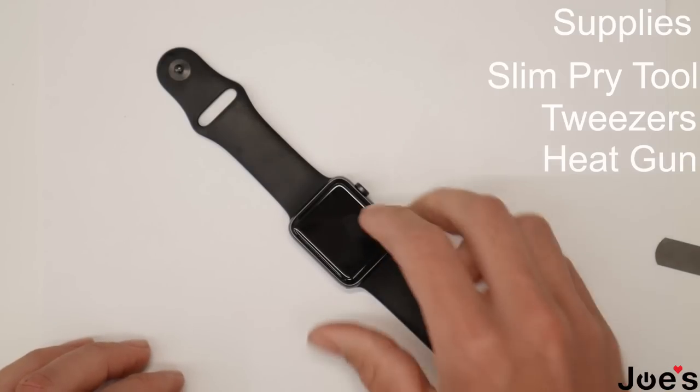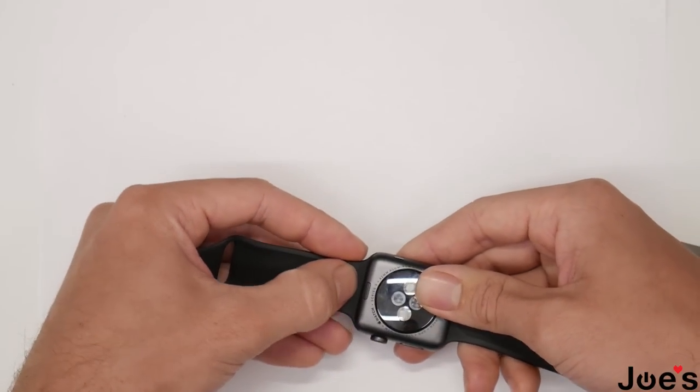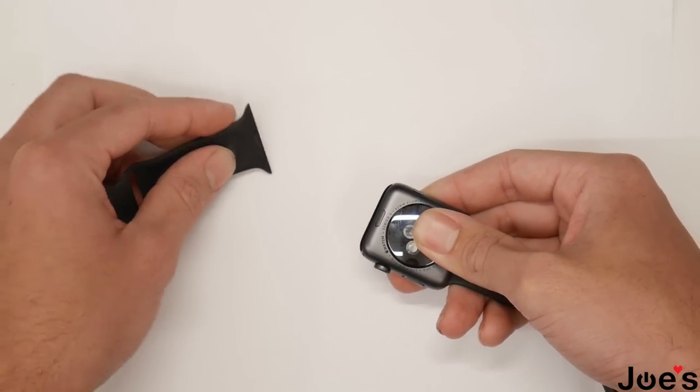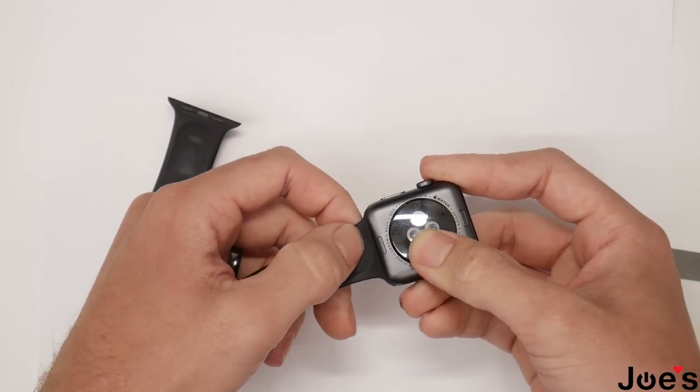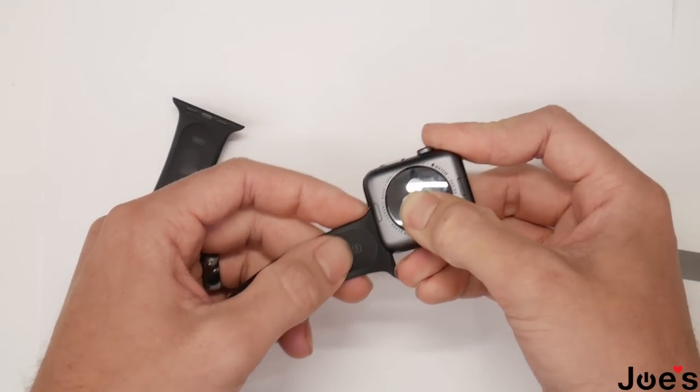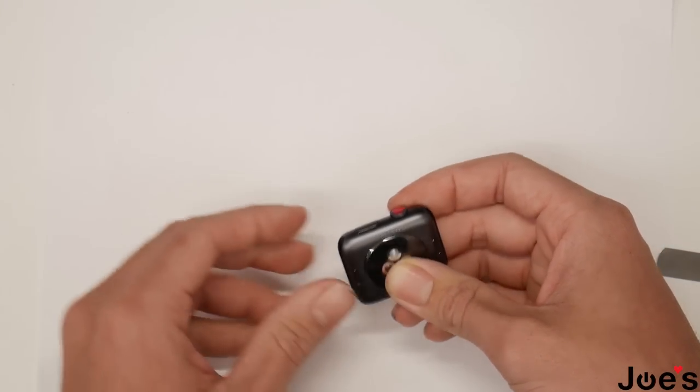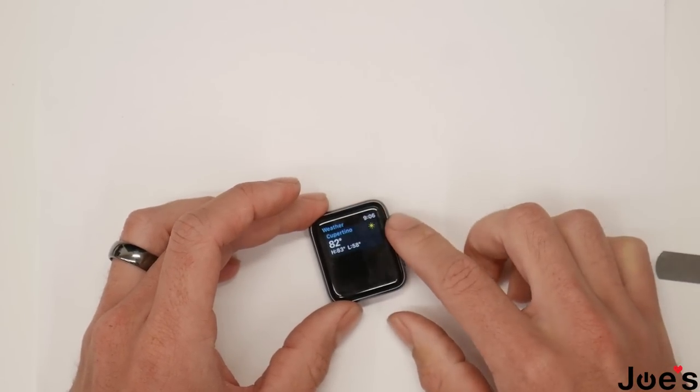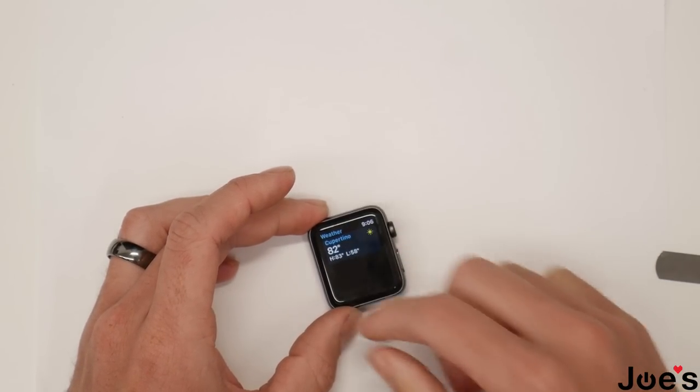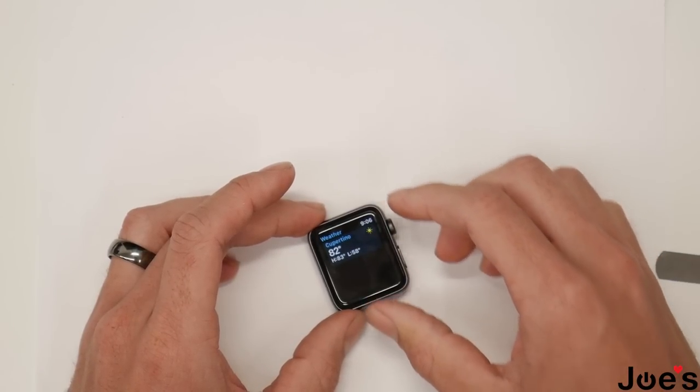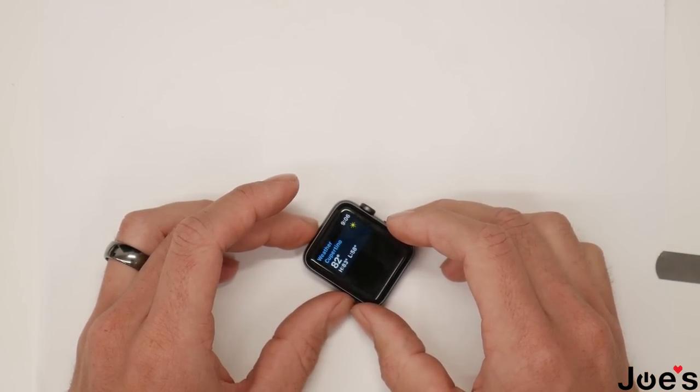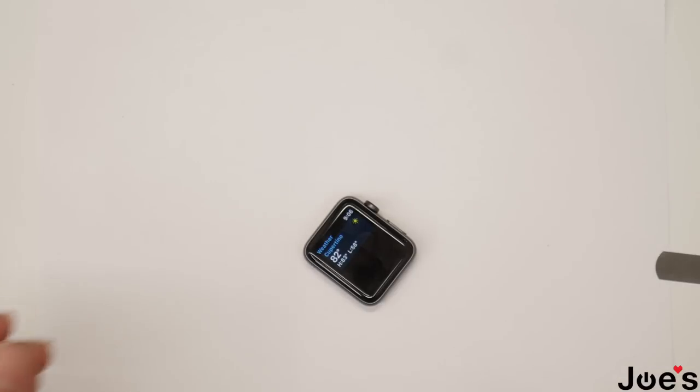You're going to want to flip your watch over, remove your bands, just simply press this button on the back, slide the band out, put this aside for now. And you're going to want to take your watch and get a heat gun, heat it up, get the adhesive nice and soft, and then we'll start opening up the screen.